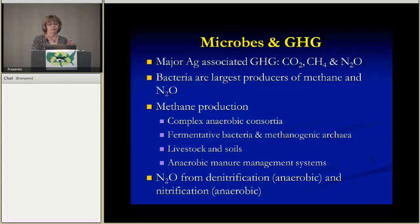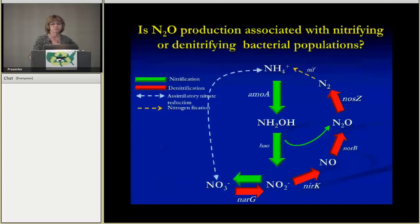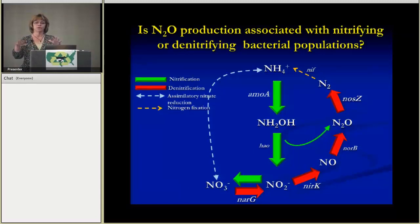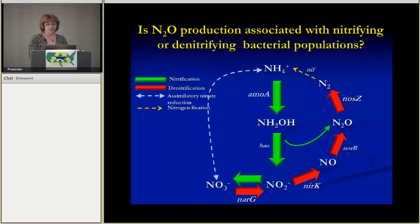N2O is produced from both anaerobic denitrification and aerobic nitrification. This is my nitrogen cycle, which I'm sure many of you have seen before, except this one has the enzymes and bacteria responsible for converting those compounds. The green is the nitrification, and N2O is produced aerobically as a kind of leak or byproduct from conversion of hydroxylamine to nitrite. In denitrification — the anaerobic production — there's a direct product that is nitrous oxide from incomplete denitrification. I'll talk about both of those methods.